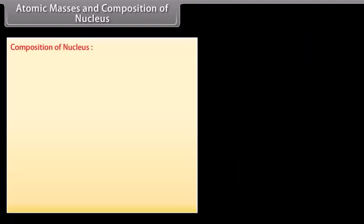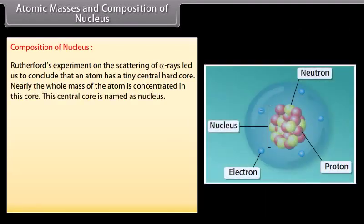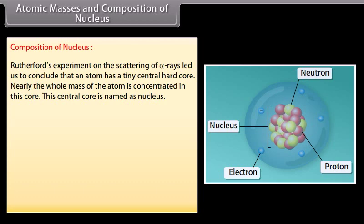Composition of nucleus. Rutherford's experiment on the scattering of alpha rays led us to conclude that an atom has a tiny central hard core. Nearly the whole mass of the atom is concentrated in this core. This central core is named as nucleus.